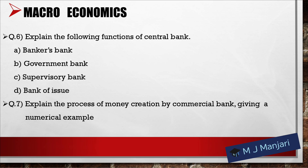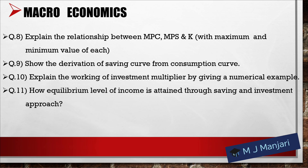Question 7: Explain the process of money creation by commercial bank giving a numerical example. Question 8: Explain the relationship between MPC, MPS and K with maximum and minimum value of each. Question 9: Show the derivation of saving curve from consumption curve. Question 10: Explain the working of investment multiplier by giving a numerical example.